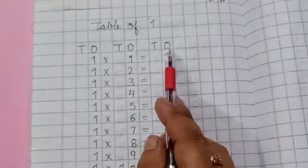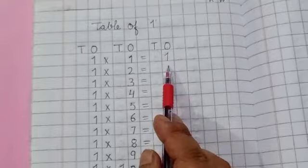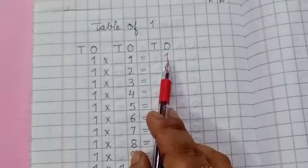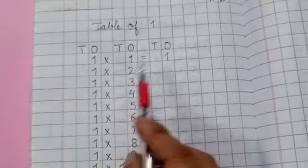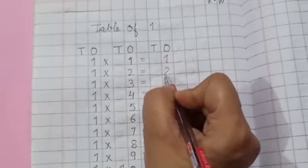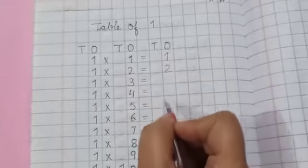You have to write zero in one's place. Because, the one that we have is a single digit. One, twos are two. One, twos are two.